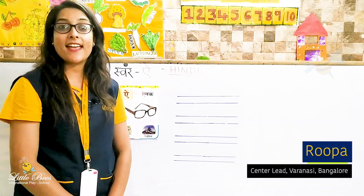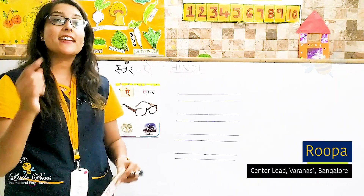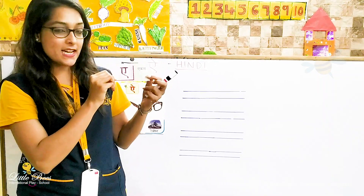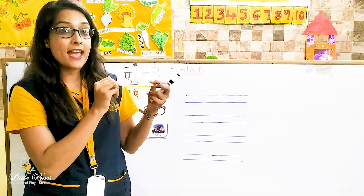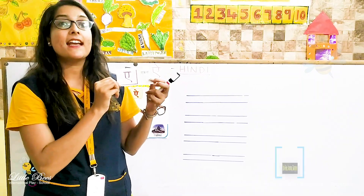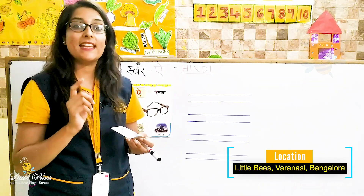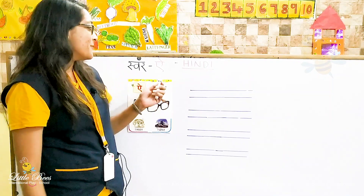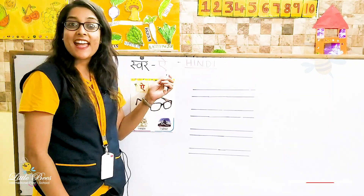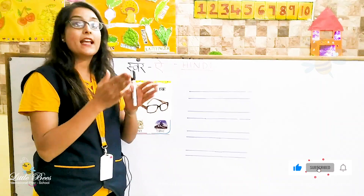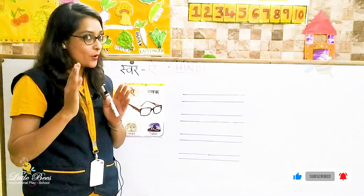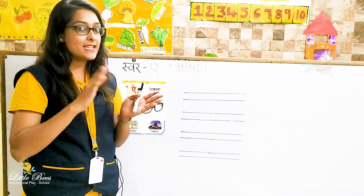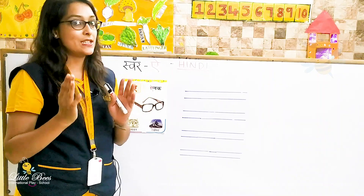It is ae. In previous class we learnt the swar ae — can you see here? We learnt the swar ae. Ae say ekata, and ekata means unity. So today we will learn the swar ae. There is a difference between ae and ae — I will repeat it again: ae, ae. There is a slight difference between these two swars.